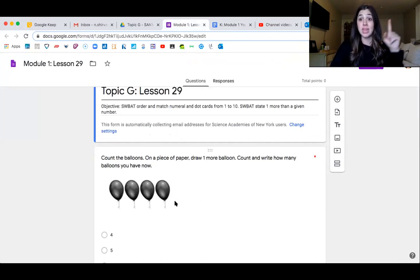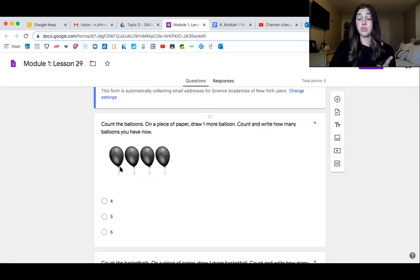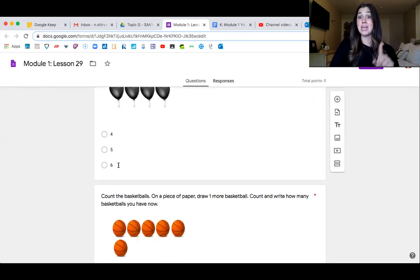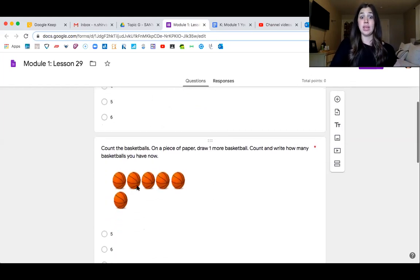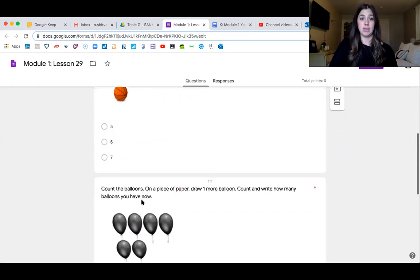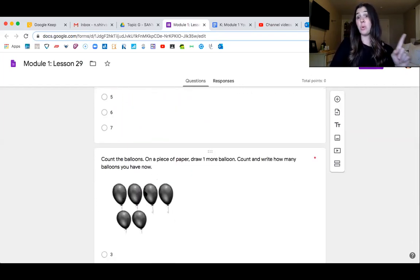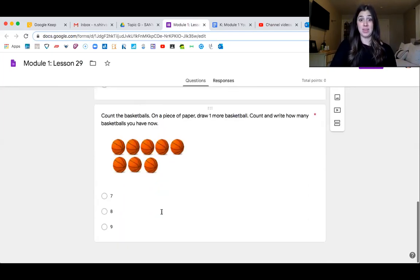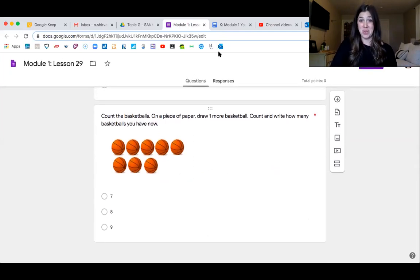Okay, so now, count these balloons, either on a piece of paper, or just in your brain, draw one more balloon, or just think of one more balloon, so if you have four balloons here, how many would one more be, I have four, one more is, and choose how many one more would be. Count the basketballs, how many would one more be. Count the balloons, how many would one more be, and then count the basketballs, how many would one more be, got it?